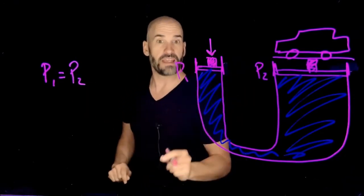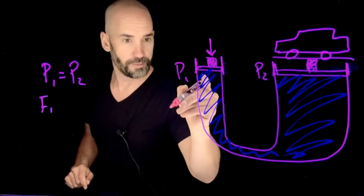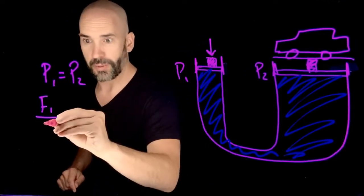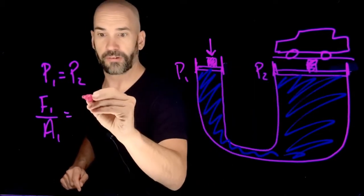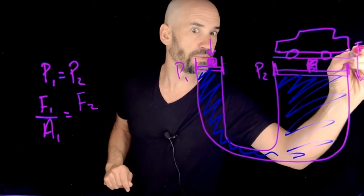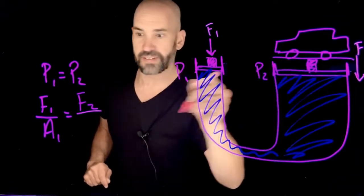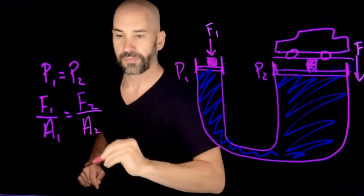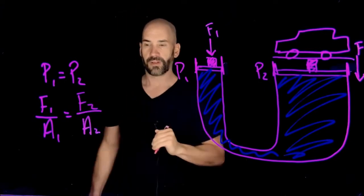But let's unpack that. What does that mean? That means that the force here at 1, F1, over the area here, remember pressure is force divided by area, must equal the force applied down here, F2. So this is F1 divided by the area of this guy, which we'll call A2. So F1 over A1 must equal F2 over A2.